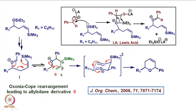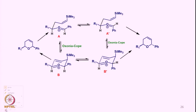Now this allylsilane derivative can undergo easily a pi-cation cyclization such that we generate a carbocation at this particular position, which is a beta position with respect to the silicon, and therefore there is stability of the cation by the beta-silicon effect. We can write the transition state in this fashion where R1 and the phenyl groups are equatorially oriented, which then by the loss of the carbon-silicon bond and cyclization to form the C-C bond leads to this particular cyclic olefin.